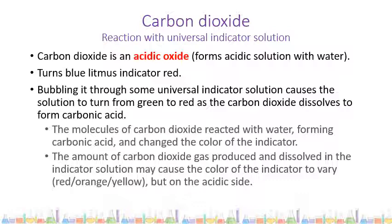For carbon dioxide's reaction with universal indicator: we already know CO2 forms an acidic solution in water, confirming it is an acidic oxide. The syllabus specifically requires knowledge of its reaction with universal indicator solution. Bubbling CO2 through universal indicator causes the solution to turn from green (neutral) to red as carbon dioxide dissolves to form carbonic acid. The molecules of CO2 react with water to form carbonic acid and change the indicator's color; depending on the amount dissolved, the color may vary between red, orange, and yellow — all on the acidic side of the scale.